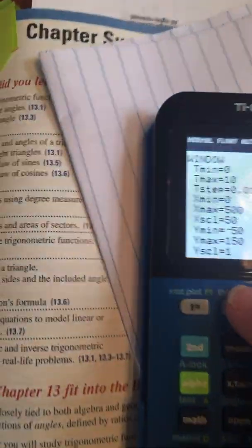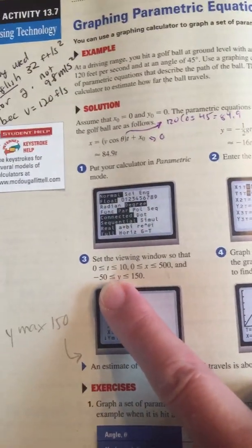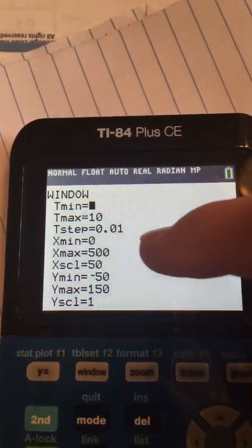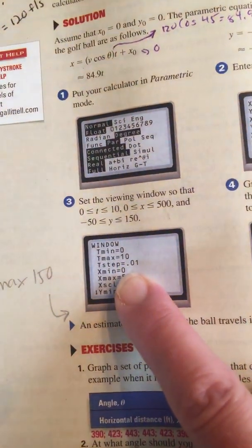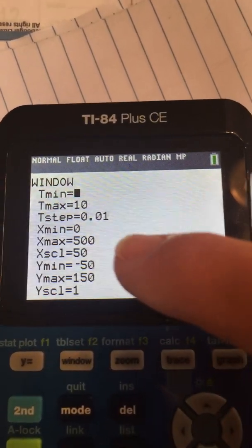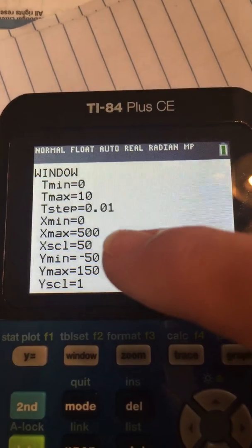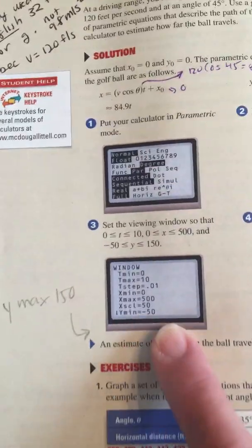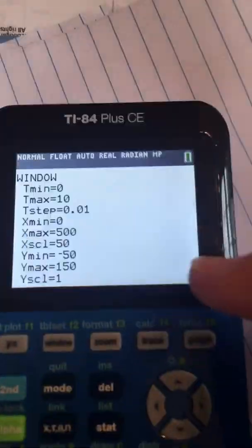Now they tell us to set our window. So you do need to do this. On our window, they want T to be between zero and 10. So your minimum is zero, your maximum is 10. They want the change to be 0.01 and they want the X minimum to be zero, the X maximum to be 500, the scale to be 50, the Y minimum to be negative 50. The Y maximum they don't show you here. It needs to be 150.